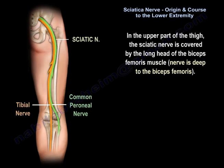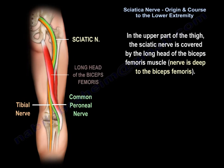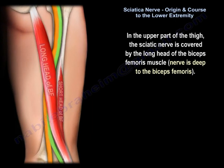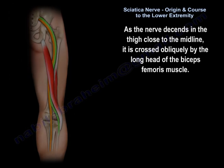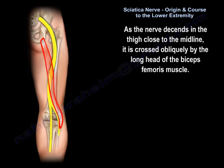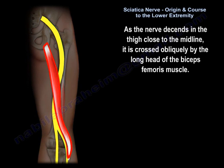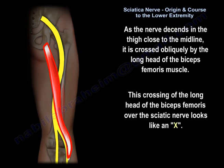In the upper part of the thigh, the sciatic nerve is covered by the long head of the biceps, and the nerve is deep to the biceps femoris. As the nerve descends in the thigh close to the midline, it is crossed obliquely by the long head of the biceps femoris muscle. That's why the nerve appears to be deep to the biceps femoris muscle. This crossing of the long head of the biceps femoris over the sciatic nerve looks like an X.